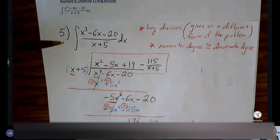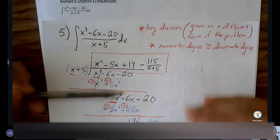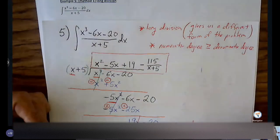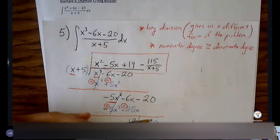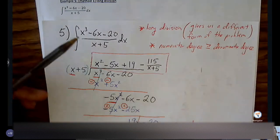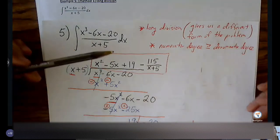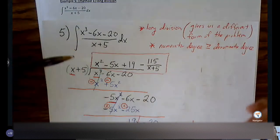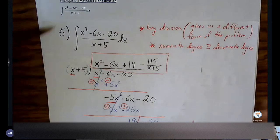If we let the u value be x plus five, that's not ideal because the derivative of x plus five is not going to be able to handle the x cubed minus 6x minus 20 in the numerator. So now we have a third option — we're working our way down this checklist. This checklist will extend further as we go deeper into chapter five. But right now, our third item on the checklist is long division.